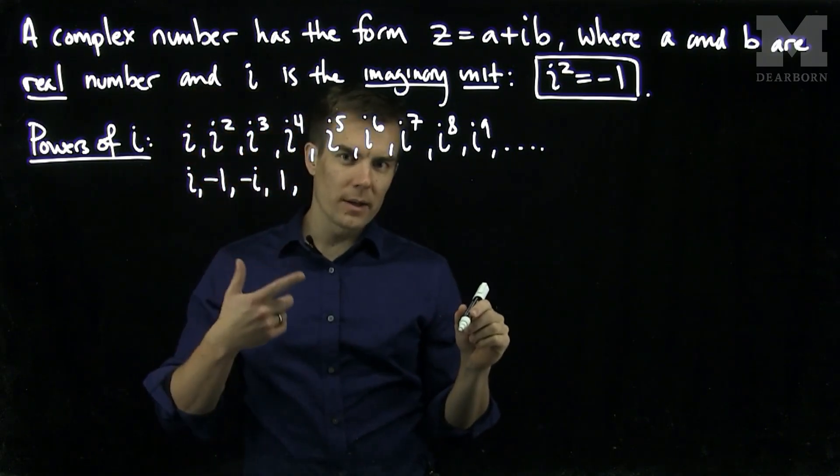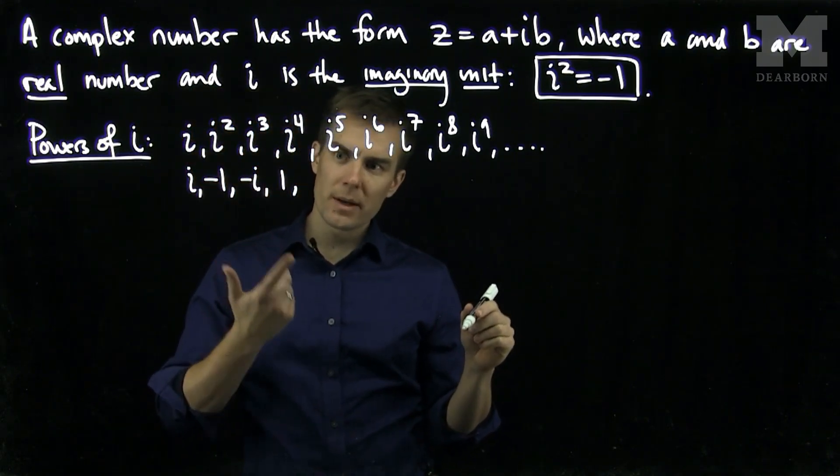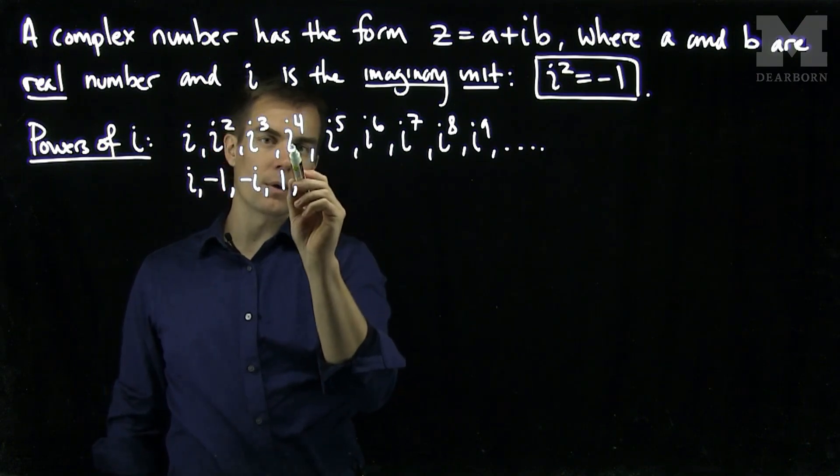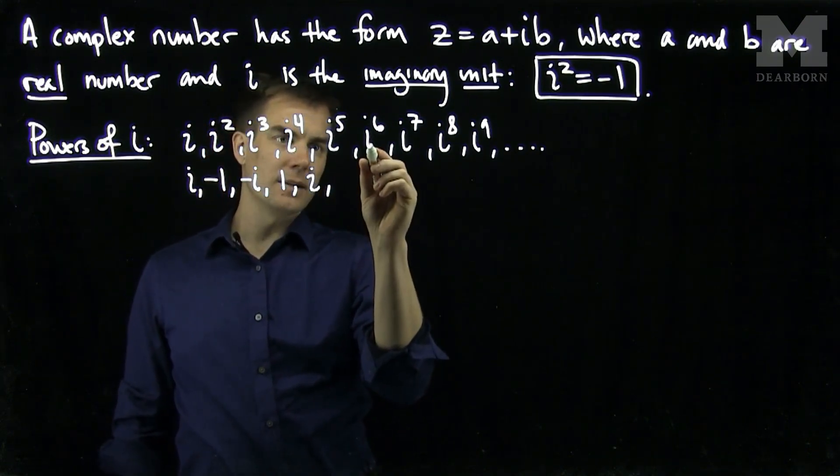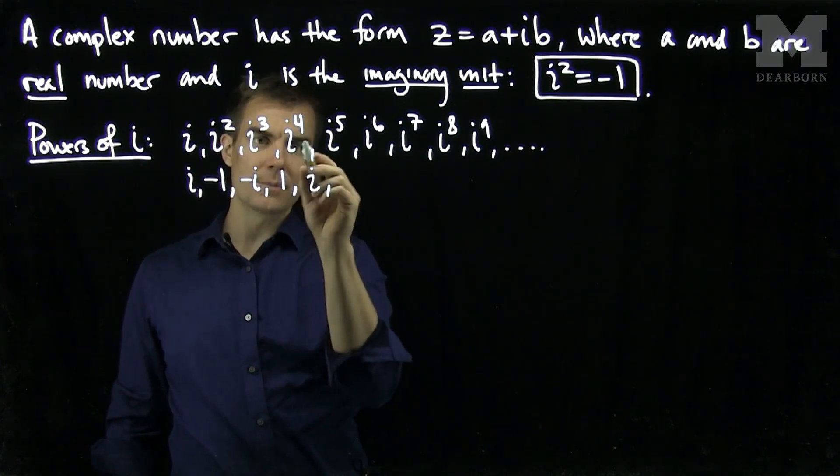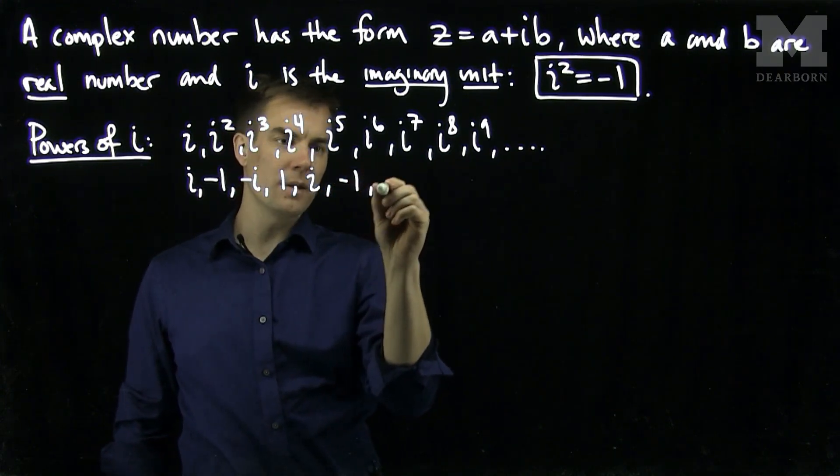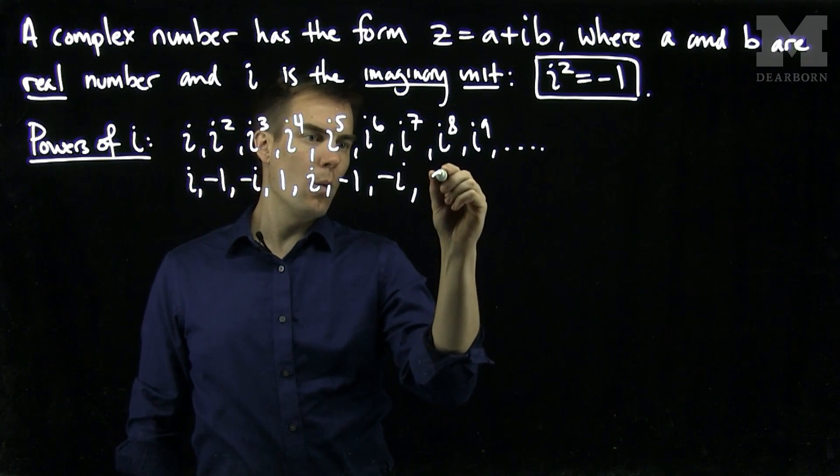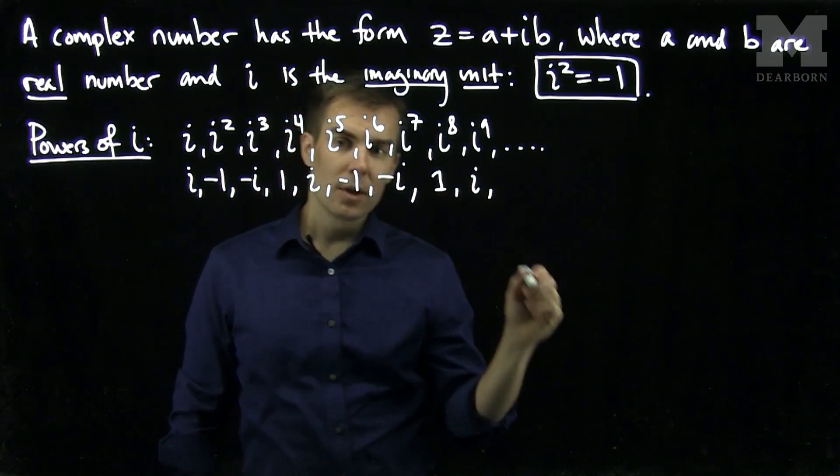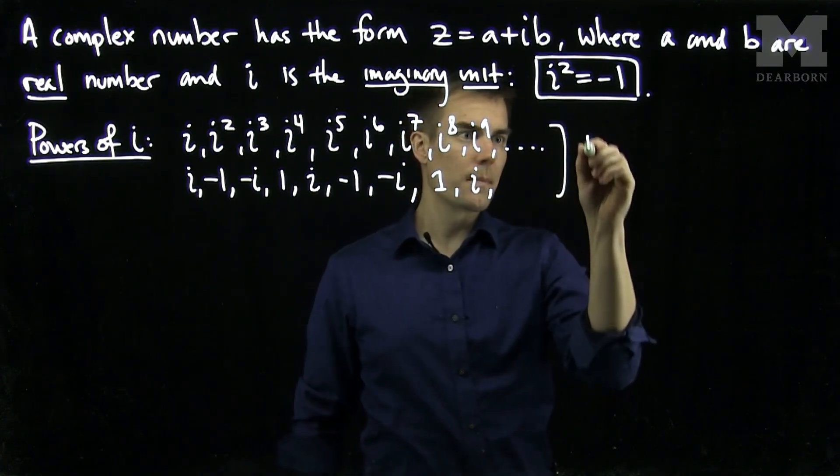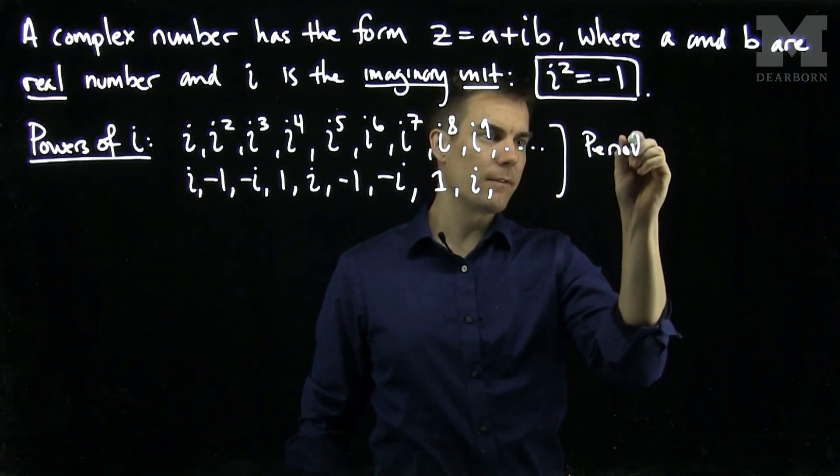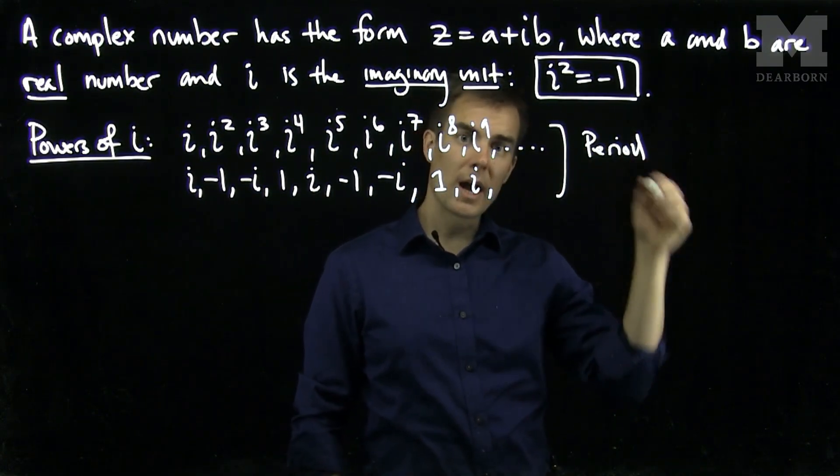Once we get to one in the list, we'll see that the list will start to repeat itself. So i to the fifth power is i to the fourth power times i, so that will be i. i to the sixth power will be i squared times i to the fourth, negative one, negative i, one, then back to i. So the sequence of powers of i has period four, meaning that every four terms I start to repeat.